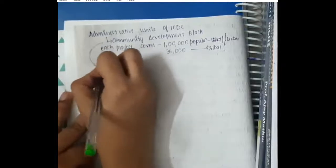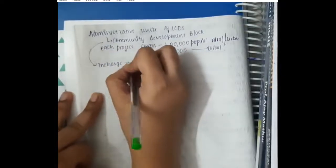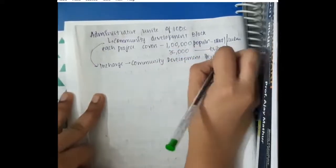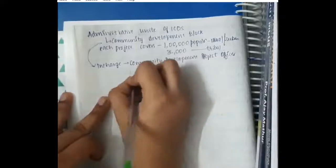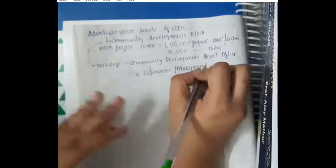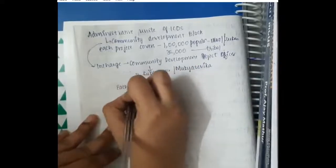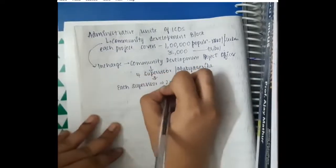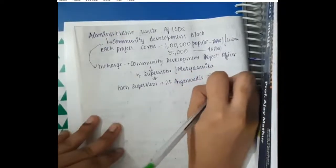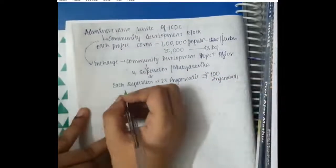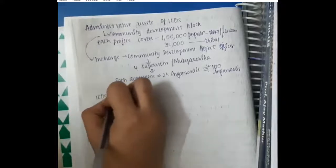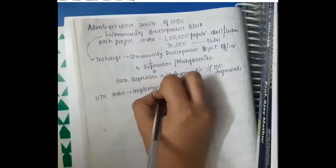One Community Development Project Officer has 4 supervisors or Mukhya Sevika. Each supervisor is in charge of 25 Anganwadis. That means under one community development block there are 100 Anganwadis total.